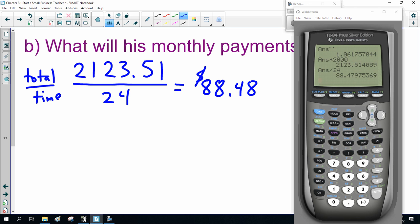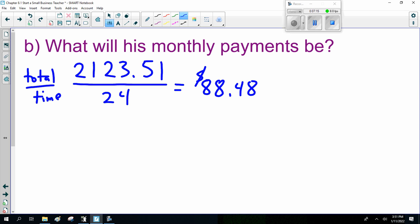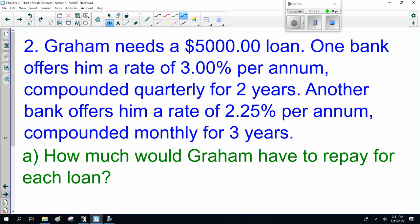Now, that is the beauty of a loan. You can get relatively a lot of money. For some people, $2,000 is a lot. But you only have to pay $88 a month, which is reasonable. So, you do the same sort of thing with a house and a car.